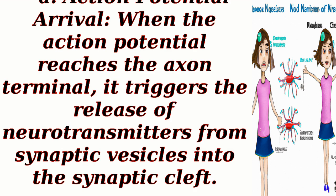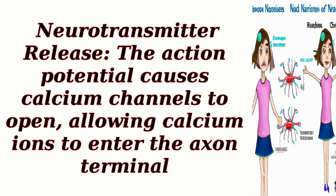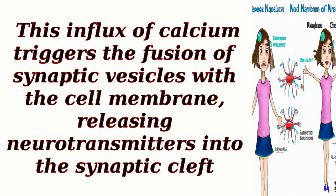When the action potential reaches the axon terminal, it triggers the release of neurotransmitters from synaptic vesicles into the synaptic cleft. The action potential causes calcium channels to open, allowing calcium ions to enter the axon terminal. This influx of calcium triggers the fusion of synaptic vesicles with the cell membrane, releasing neurotransmitters into the synaptic cleft.